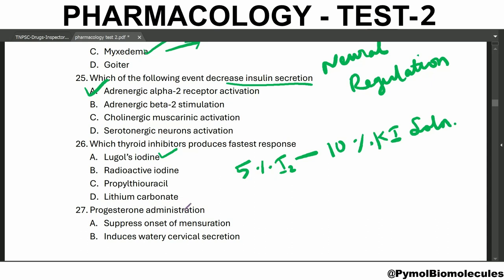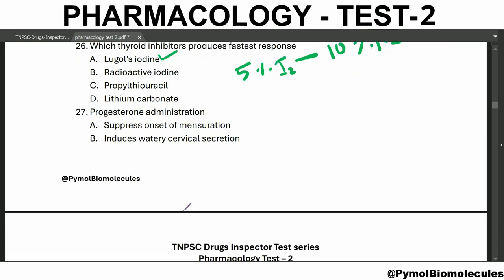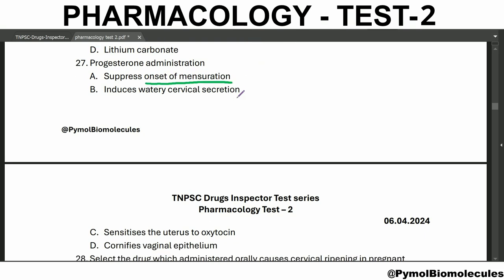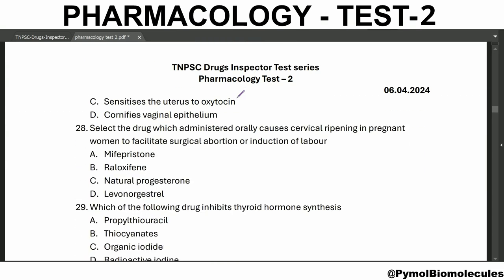Progesterone administration suppresses the onset of menstruation. Which drug administered orally causes cervical ripening in pregnant patients and facilitates surgical abortion or induction of labor? Mifepristone. It is also used in first trimester abortion, and administration in the late luteal phase causes menstruation.